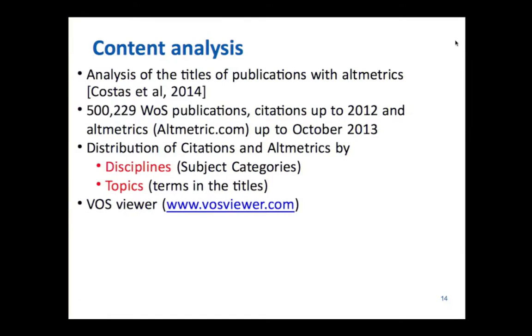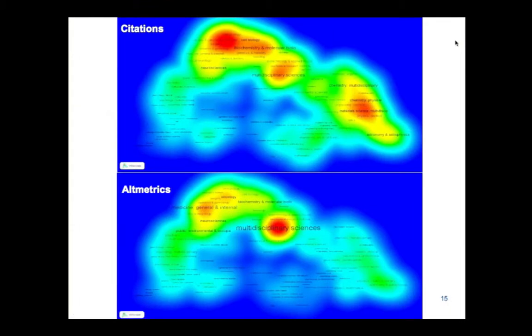We also looked at the content of the papers covered, examining the distribution of citations and altmetrics across disciplines and topics, using terms in paper titles. On a map of science — with medical fields at the top, chemistry and physics on the right, and social sciences and humanities on the left — when comparing citations with altmetrics, altmetrics disappear from the right-hand side. This reinforces the idea that altmetrics are not about complicated technical topics but more about layman terms.